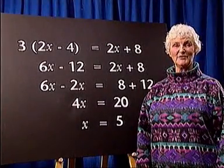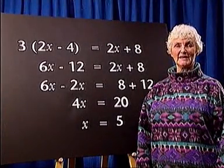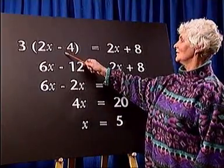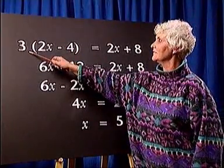The first rule for solving linear equations is to remove the brackets. So in this example, we will remove the brackets by multiplying by 3.